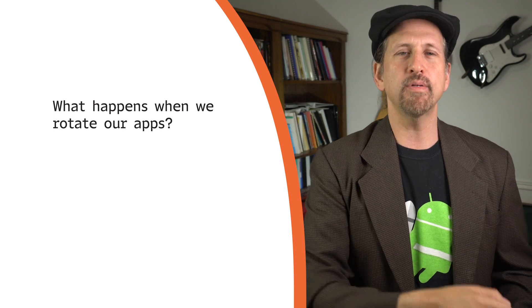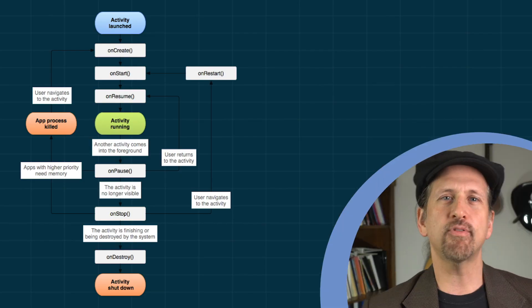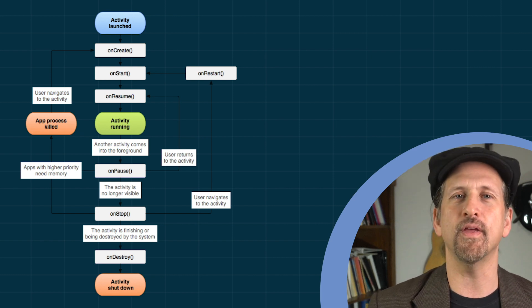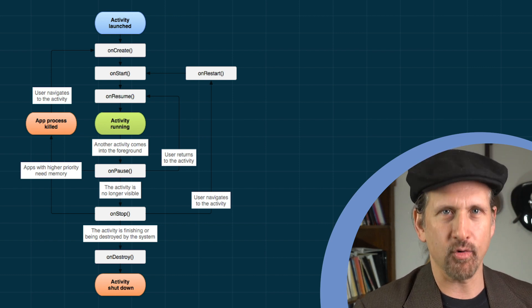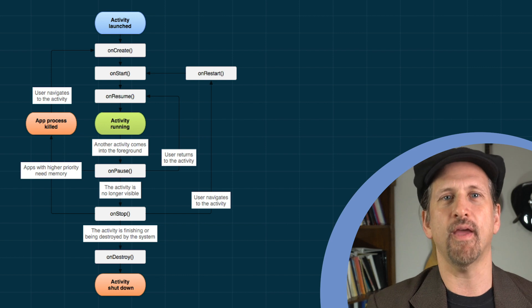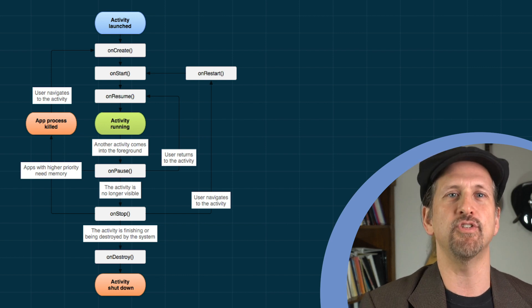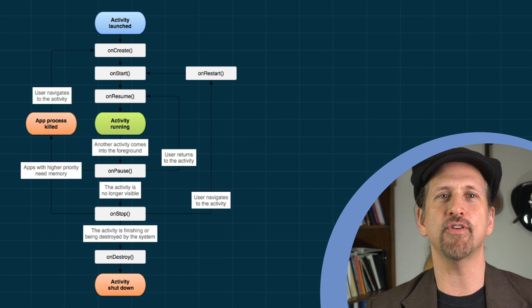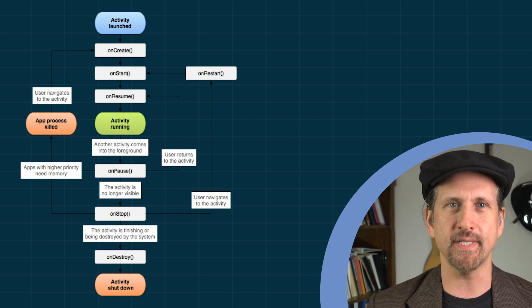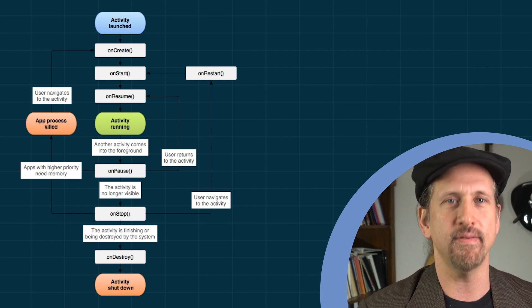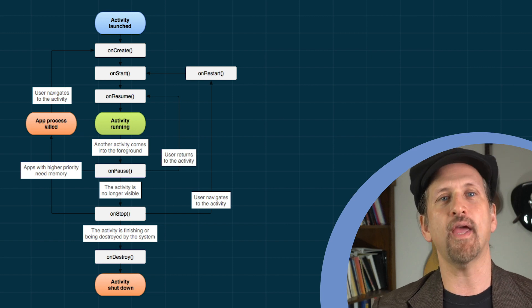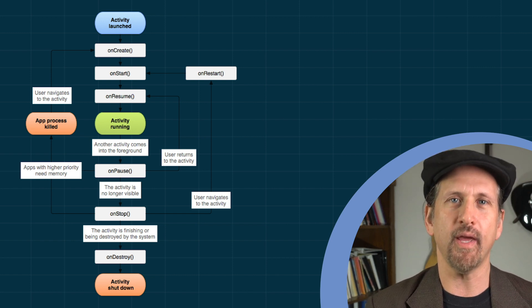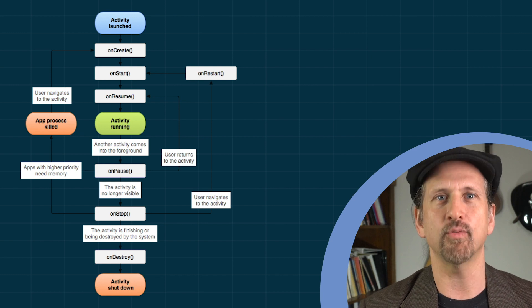What happens when we rotate our apps? When an app switches between portrait and landscape modes when the device is rotated, lots of things happen. Most relevant to Android developers is that we destroy and restart the activity so it can adjust to the new configuration and use the correct resources. This allows you to declare a different layout for portrait or landscape, and the correct layout will be chosen when the activity is recreated. If you're using Android Jetpack's ViewModel, it will be reattached when your activity is recreated, allowing you to preserve data during these rotations.